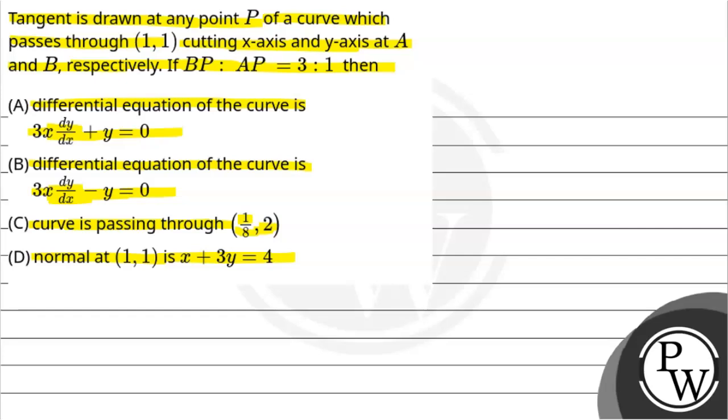Now we can recall: if tangent is drawn at any point P of the curve which passes through (1,1) and cuts the x and y-axis at points A and B such that BP to AP equals 3:1, we should choose to check option C. Before that, let's talk about the key concept which we are going to use for this question.